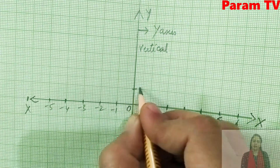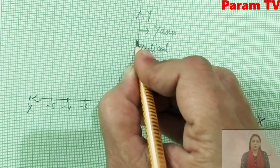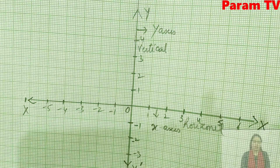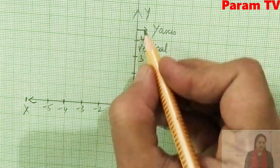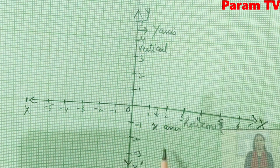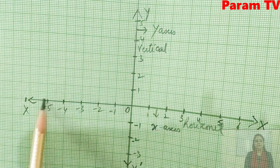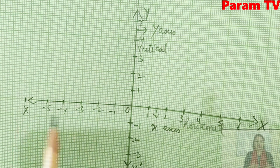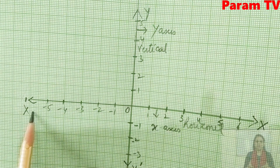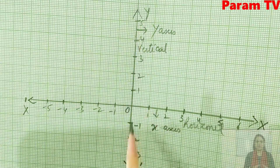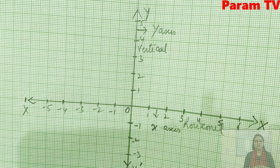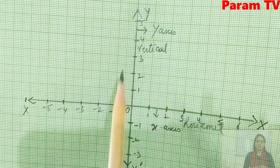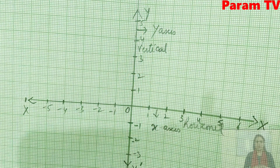Above 0 on y-axis: 1, 2, 3 and so on, up to 5. The horizontal line is the x-axis (x and x-dash), and the vertical line is the y-axis (y and y-dash).